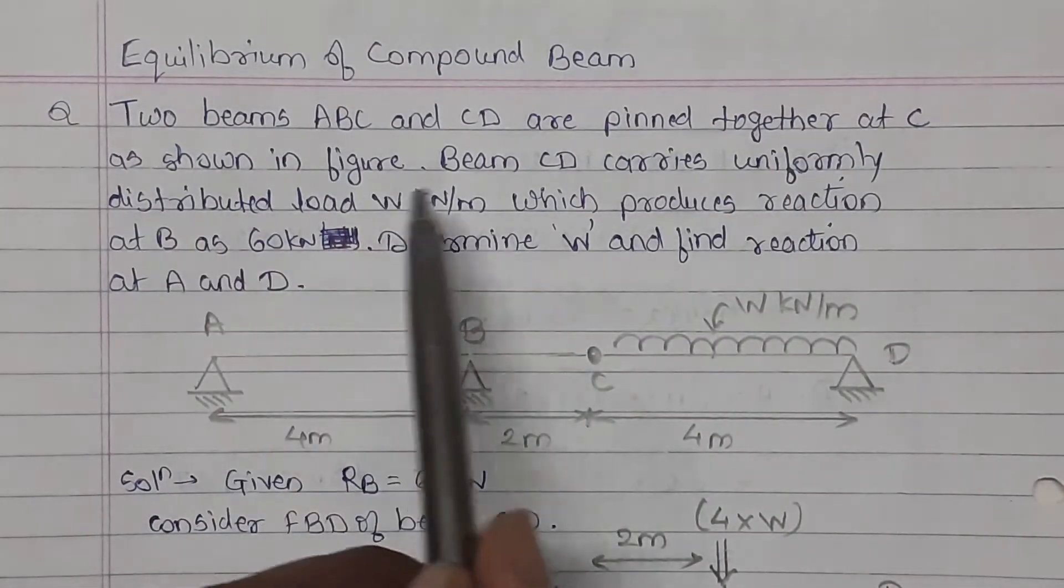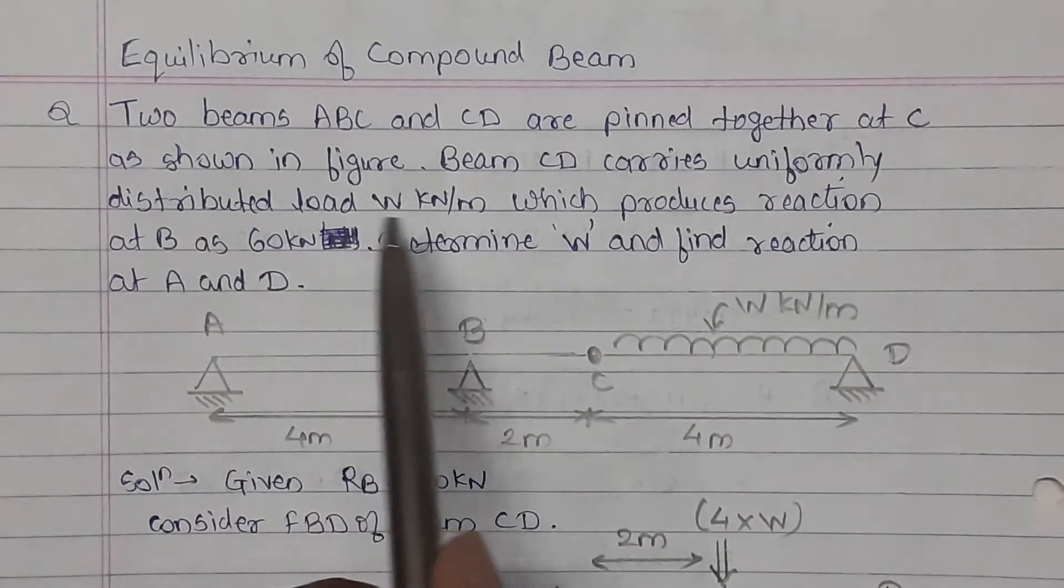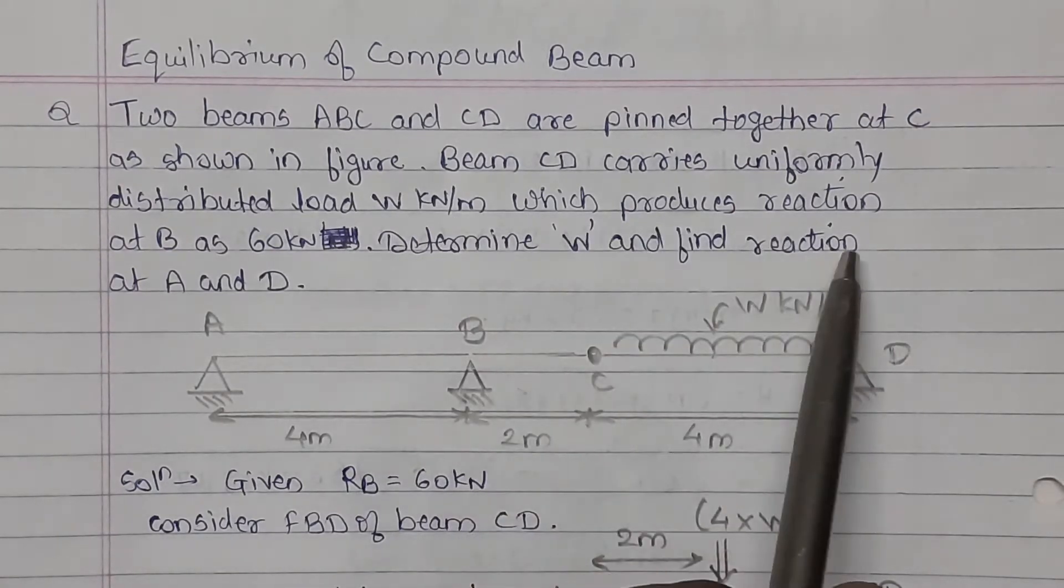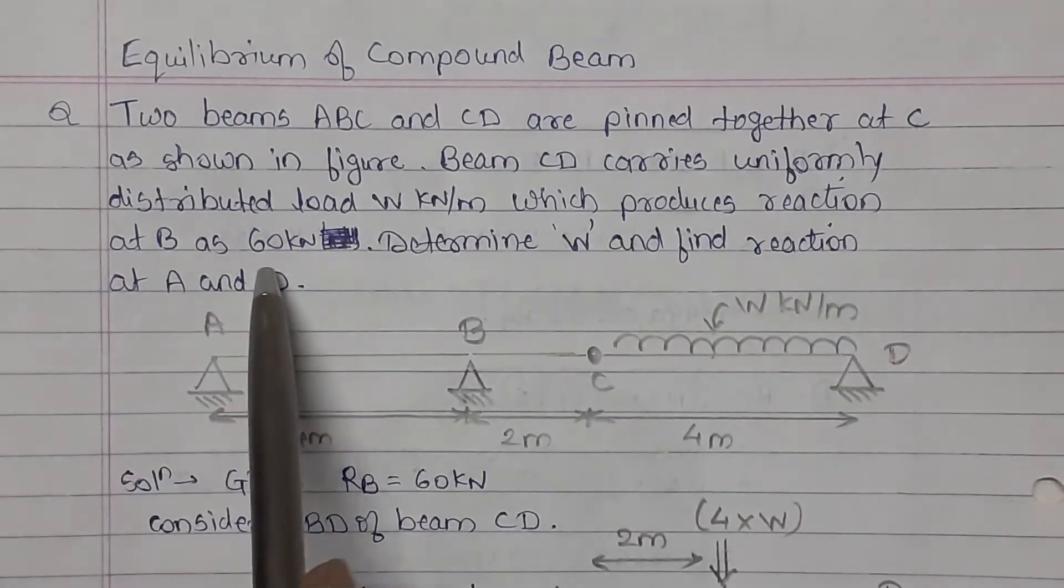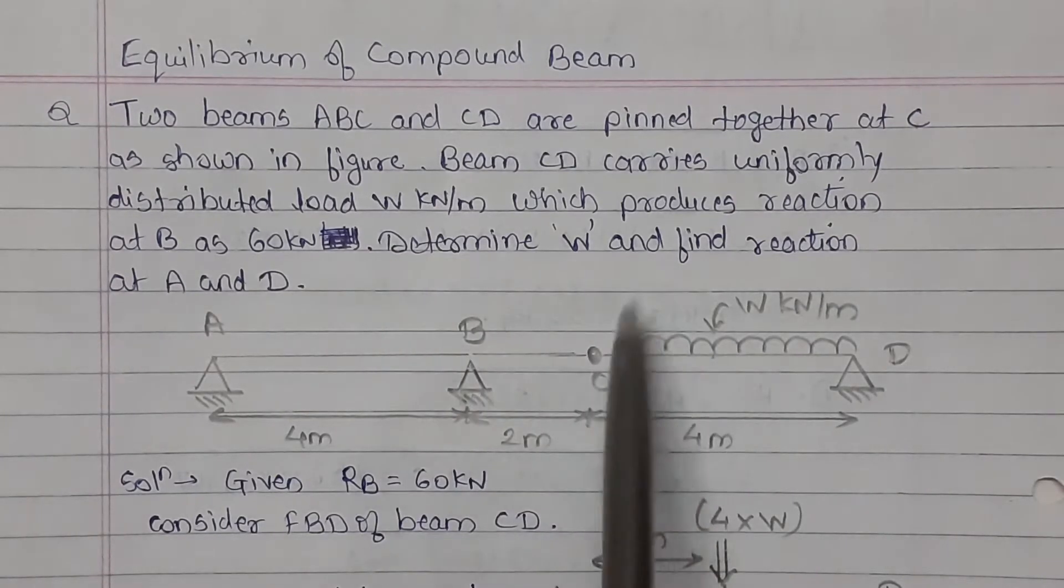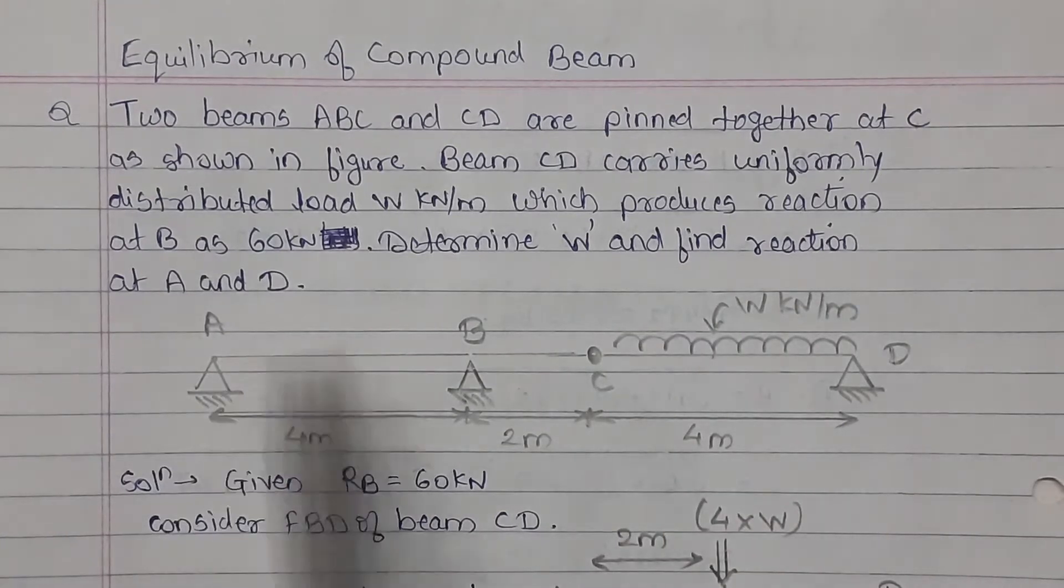As shown in figure, beam CD carries uniformly distributed load W kN per meter which produces reaction at B at 60 kN. Determine W, that is load intensity, and find reaction at A and D.